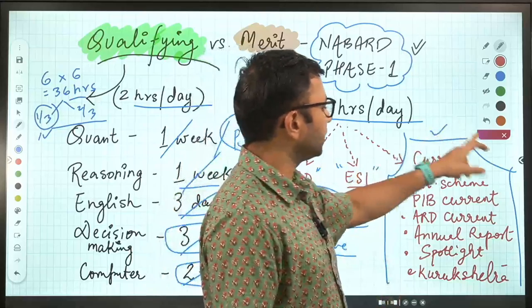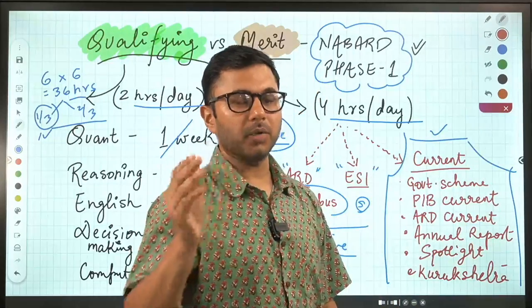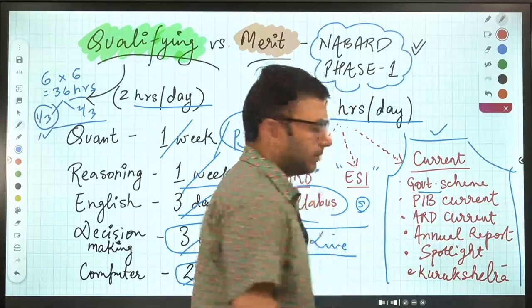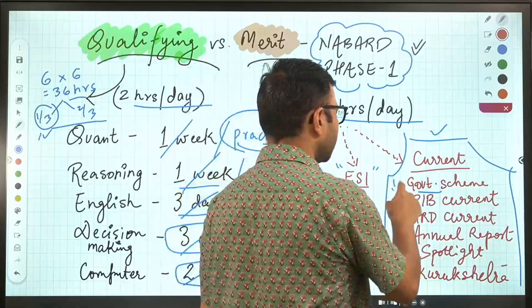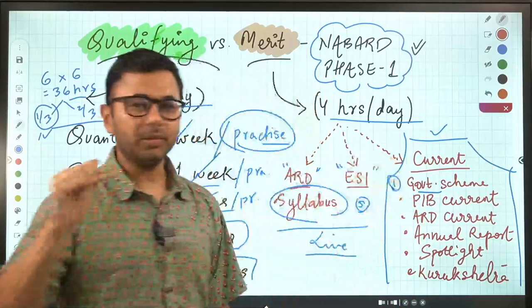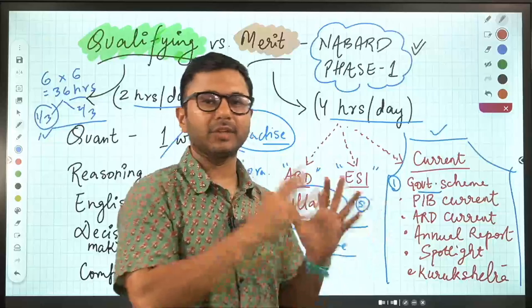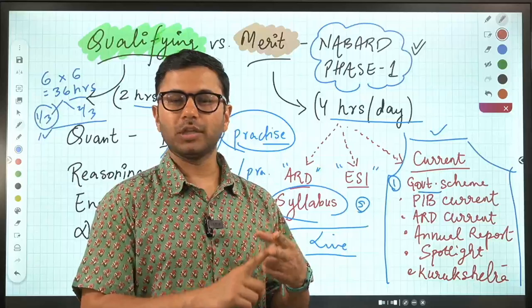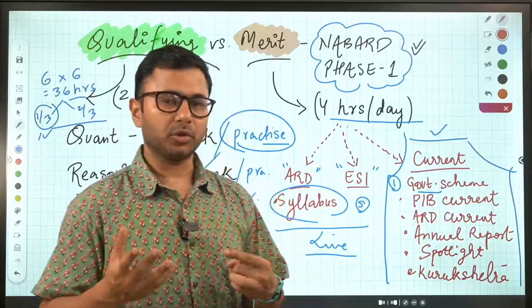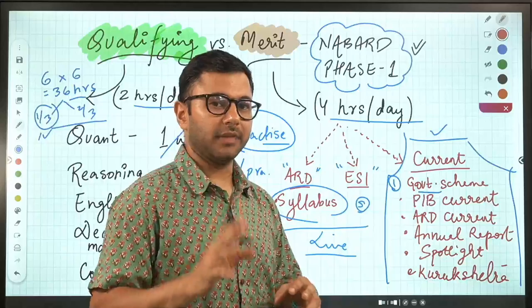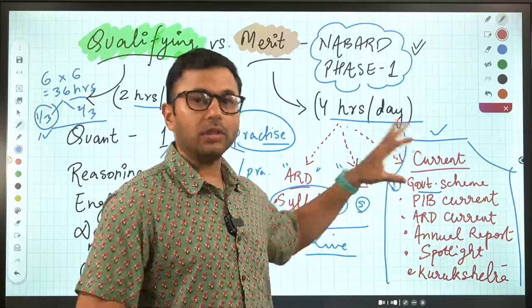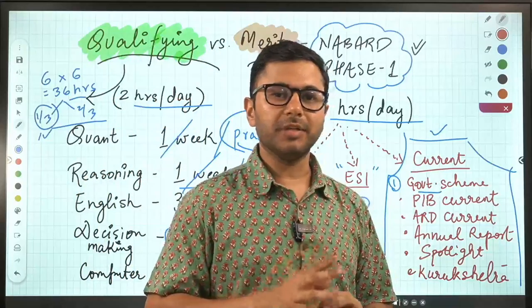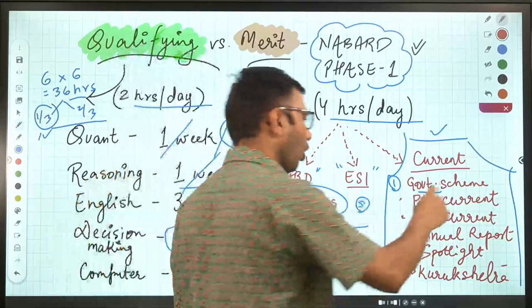When it comes to current affairs, this is what you have to cover and you have to pick it up one by one. What all do you need to cover? Number one government schemes, one of the most important. I would want to say that you start with the government schemes. The ministries which are related with agriculture and rural development, like the environment, water, social welfare, agriculture, rural development. But eventually your objective has to be to cover all the schemes before phase one itself.